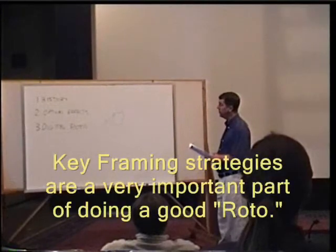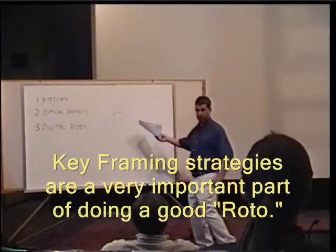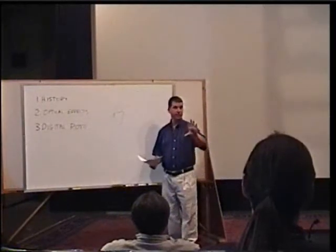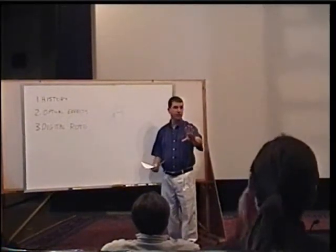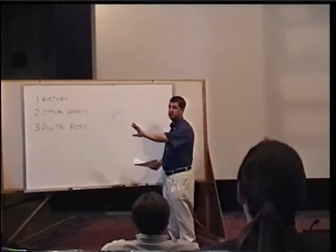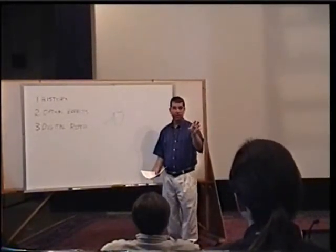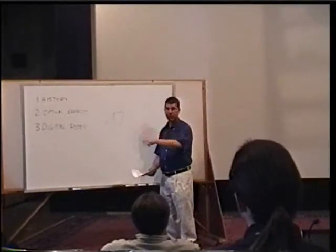Now, keyframing, a very important part of roto is, now we've got the cursor, we've created mats, we've created a shape that matches the object we want to roto, but that shape is changing through time, so we have to change our shape to match it as it goes through the shape.